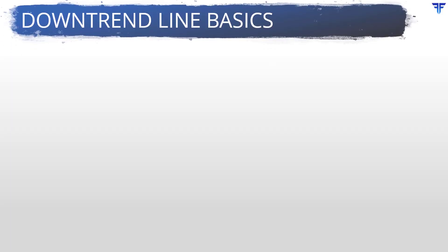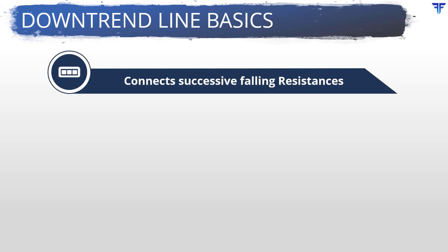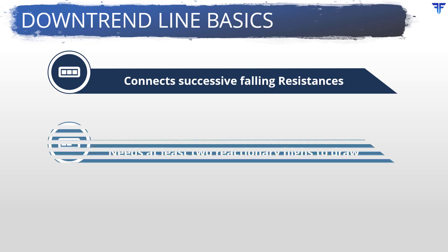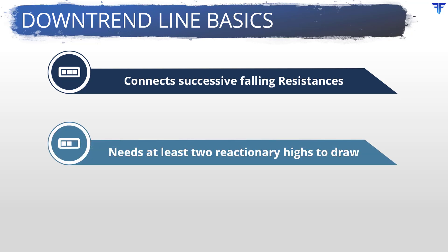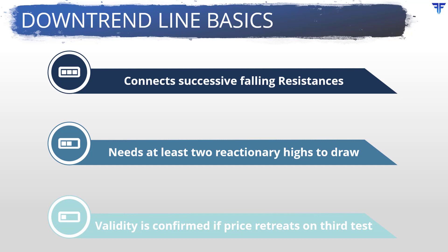Let us now switch from an uptrendline to a downtrendline. A downtrendline is a straight line that connects successive falling resistances. To draw one, you need to identify at least two successive reactionary highs with the second high below the first high. Once the highs are identified, you must connect them using a trendline. In future, any approaches towards the trendline could be met with either the downtrend line acting as resistance or the downtrend line breaking. If price takes resistance at or near the vicinity of the downtrend line and starts to decline, the validity of this downtrend line is confirmed.